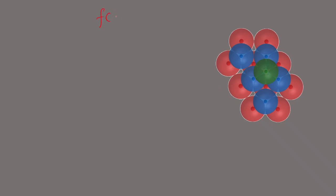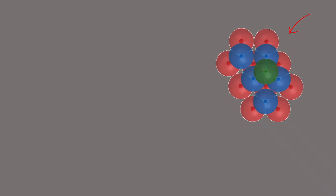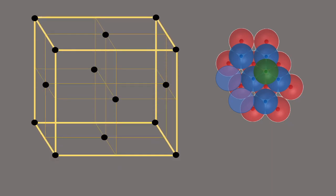Let's think about how an FCC lattice is equivalent to an ABC ABC kind of closed packing — 3D closed packing. What you see here is an ABC ABC kind of packing. The bottom layer is composed of red spheres A, then on top of that you have a layer of blue spheres B, and then on top of that a layer of green spheres C. I'm not showing all these spheres here because if I did you would only see the green spheres on top. I have this FCC unit cell and I want to compare these two and show that they are equivalent.